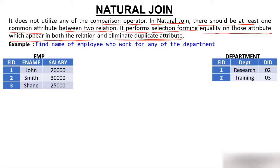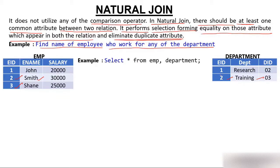Let's look at two tables: emp, which has employee id, name, and salary, and department, which has employee id, department, and department id. The task is to find the names of employees who work for any department. Employee id 1 is John working in research, id 2 is Smith working in training, and id 3 is Shane who has not been allotted any department yet.